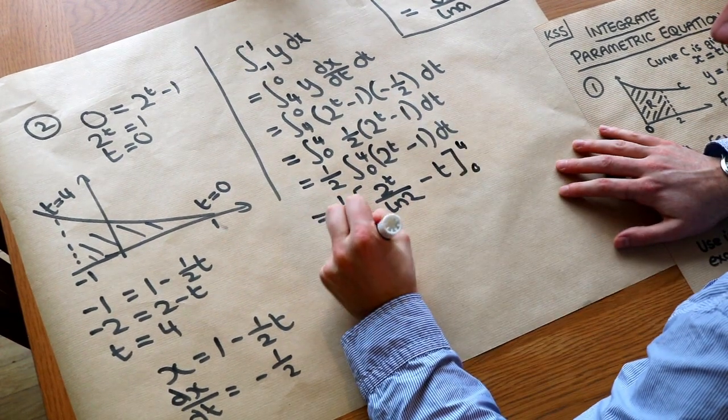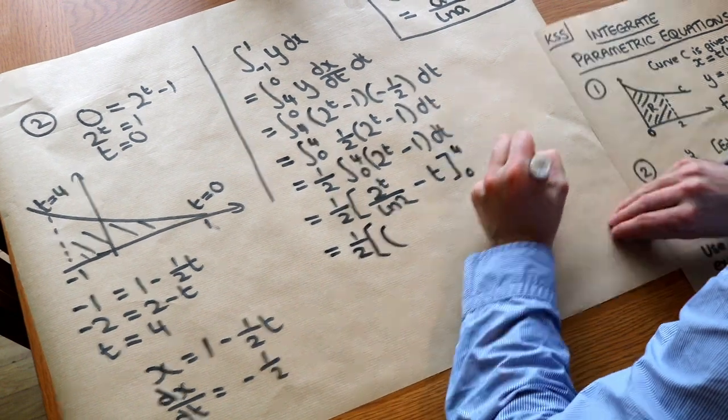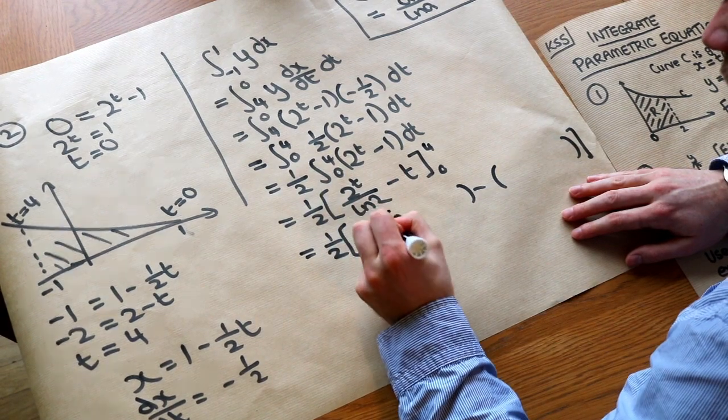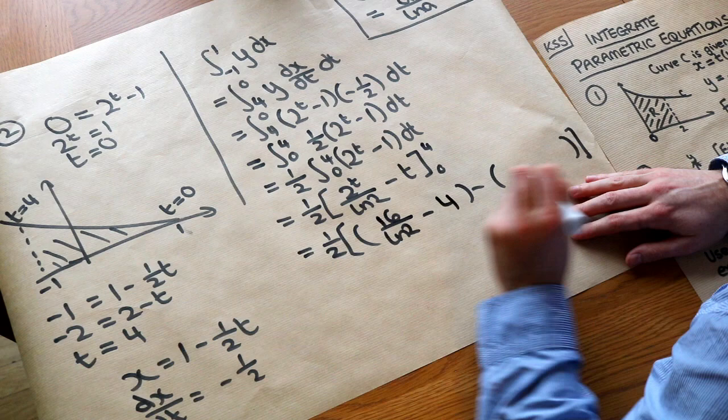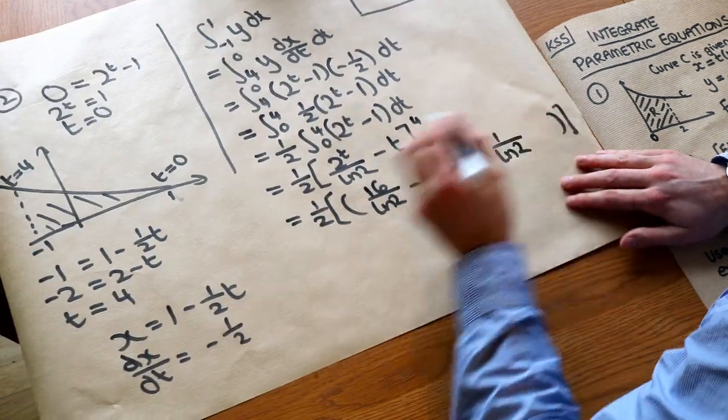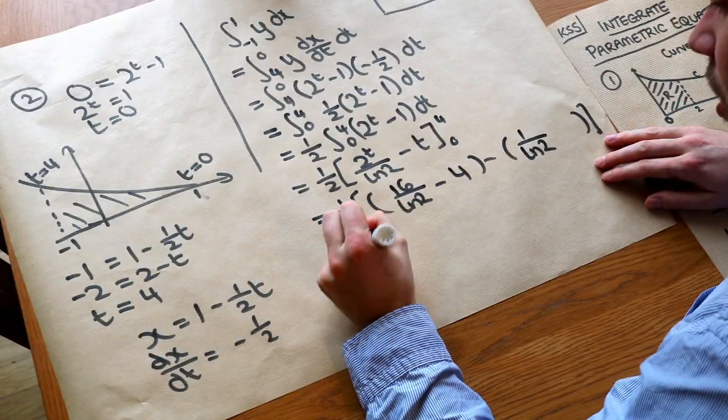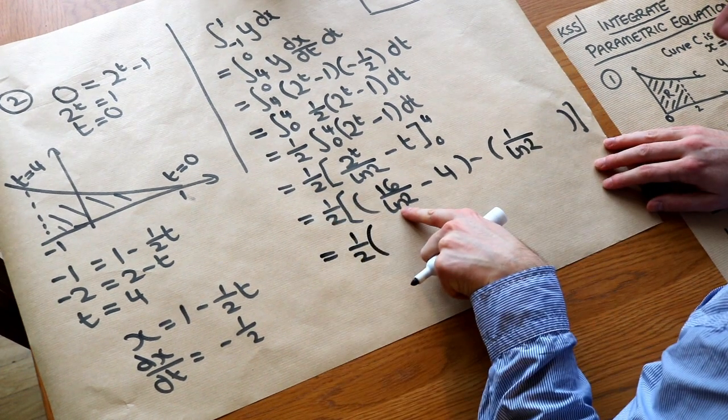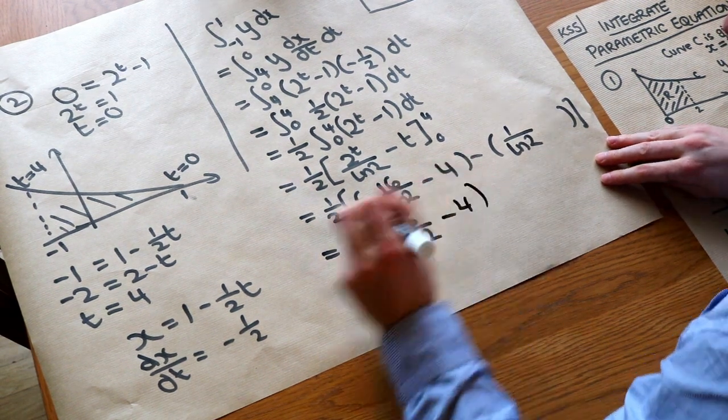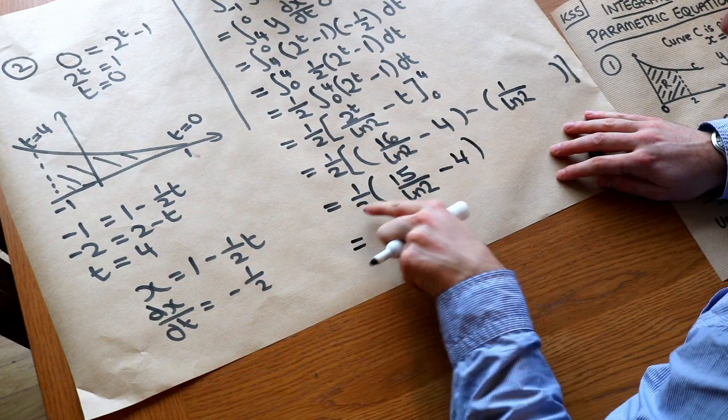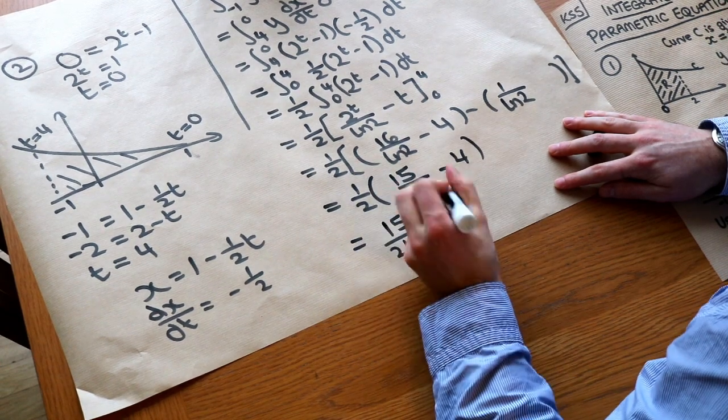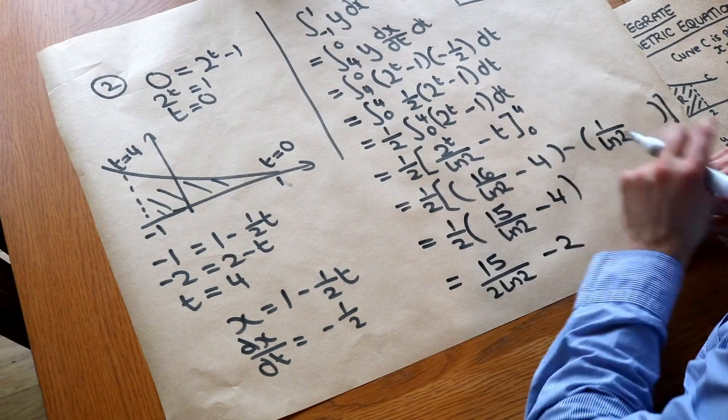So let's substitute these bounds in. So when we substitute the 4 into this, we get 2 to the 4 is 16 over ln of 2 minus T, minus 4, minus 4. And then when we sub in the 0 in, we get 2 to the 0, which is 1 minus 0, so that's just nothing there. And let's just simplify this. We've got half, and then we've got 16 over ln of 2 minus 1 over ln of 2 is 15 over ln of 2. And then we've got this minus 4. And if we wanted to times both these by half, that then becomes 15 over 2 ln 2. And the minus 4 times half is minus 2. And that would be the final answer.